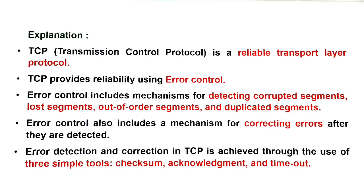TCP provides error control facility. Error control includes detecting corrupted segments, lost segments, out-of-order segments, and duplicated segments. TCP uses three simple tools for error detection and correction: checksum, acknowledgement, and timeout.